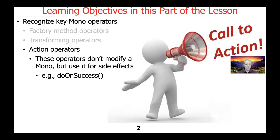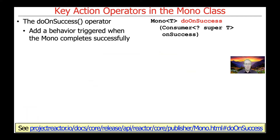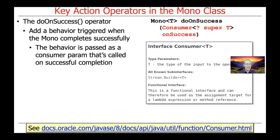The particular action operator we're going to talk about here is the doOnSuccess action operator. It is used to add a behavior that's triggered when the mono completes successfully. As you can see, doOnSuccess takes a parameter, and that parameter is a Consumer from the Java 8 Consumer class. This consumer is a functional interface that will be called back when something completes successfully, and that will have the ability to have some type of side effect.